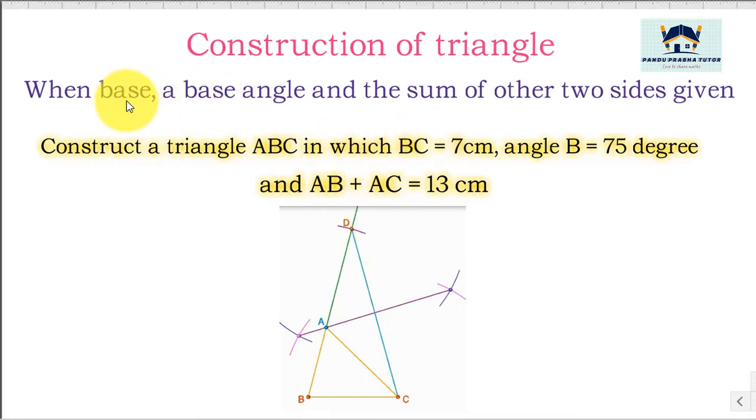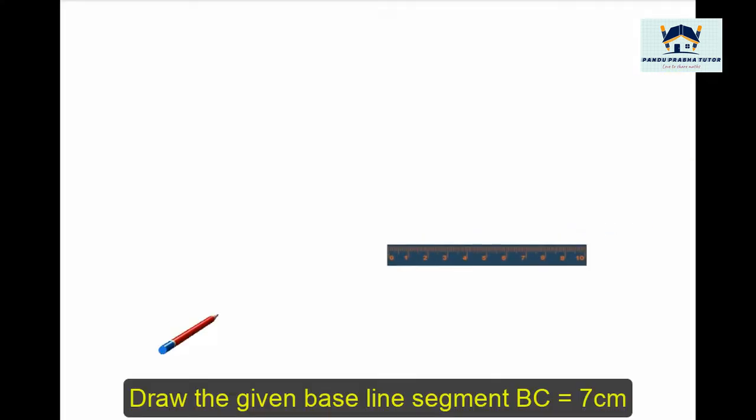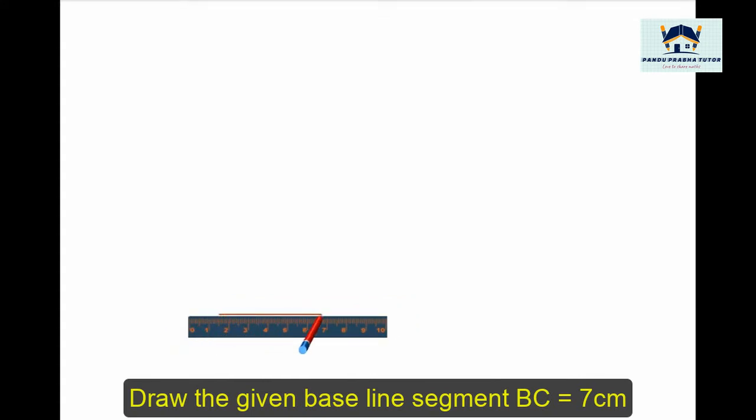Here base BC is given, base angle is given 75 degrees, and sum of two other sides are given 13 cm. Draw the given base line segment BC of length 7 cm.